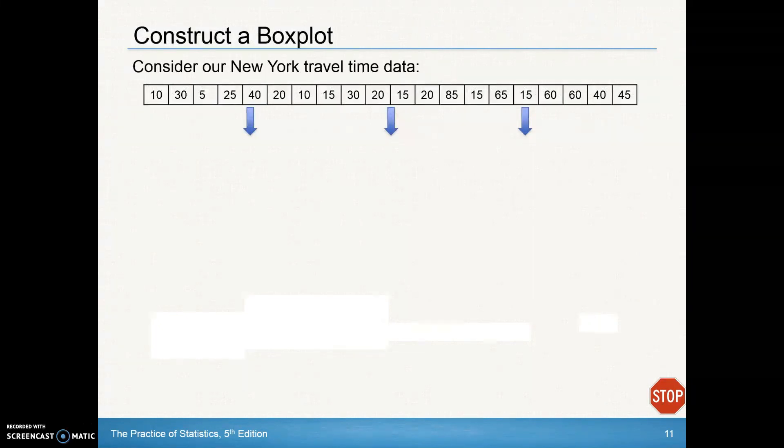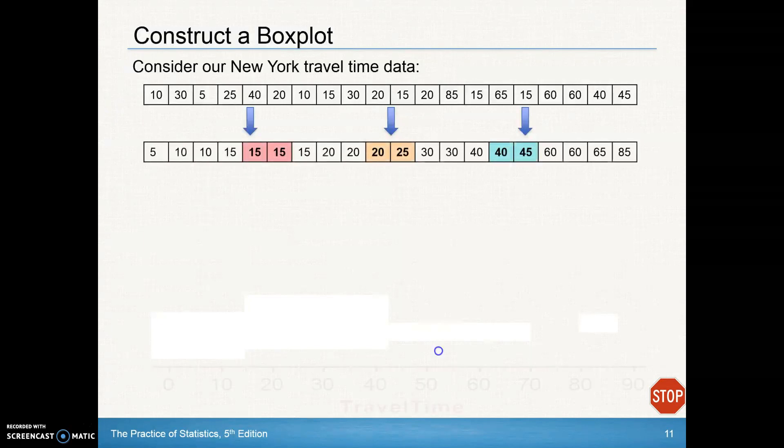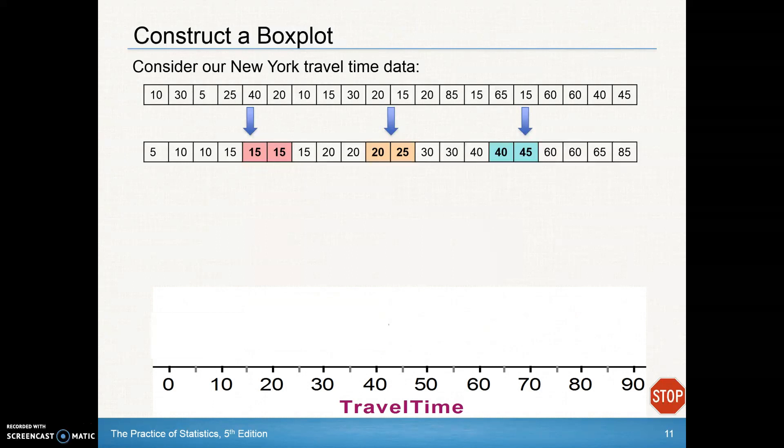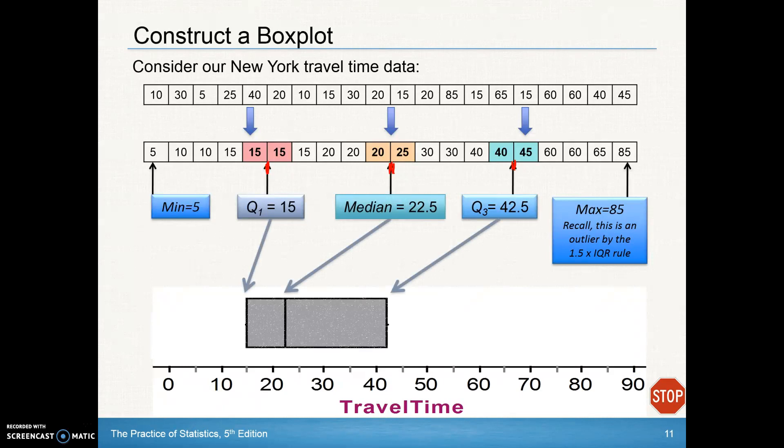Let's look at how we construct a box plot. Here's our original data. Order it from smallest to largest. The median was 22.5, Q1 was 15, and Q3 was 42.5. Make a horizontal scale that covers from smallest to largest. This data goes from 5 to 85, so make a scale from 0 to 90. We're going to put those 5 important points from the five number summary into the graph. Draw the box from Q1 at 15 to Q3 at 42.5, with the median line at 22.5.